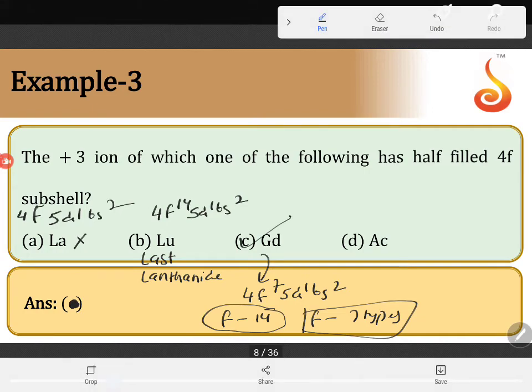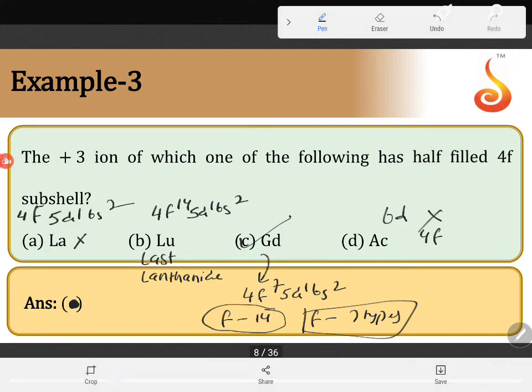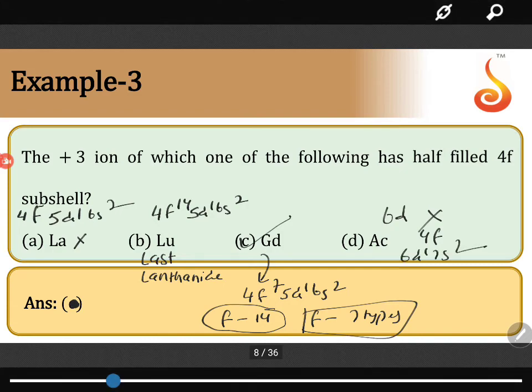And actinium is also a 6D element, which does not contain 4F electrons. In fact, its electronic configuration is 6D1, 7S2 valence, therefore actinium does not contain any 4F electrons.